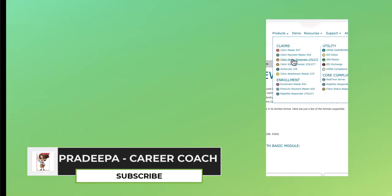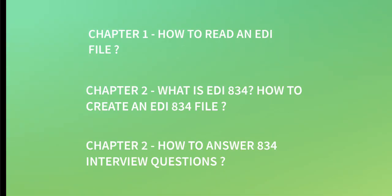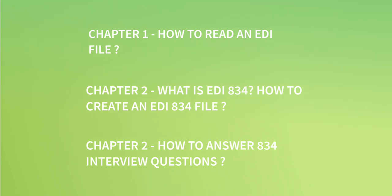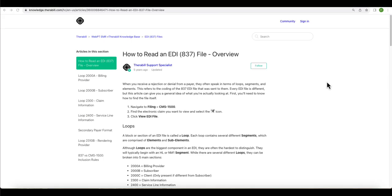Hi, this is Pradipa, your career coach. In today's video we are going to learn about how to read an EDI file and how to create an EDI 834 file and send it to the insurance. EDI 834 is a file created for enrollment. EDI means Electronic Data Interchange. These files are usually created from external systems and sent to insurance companies during the enrollment process.